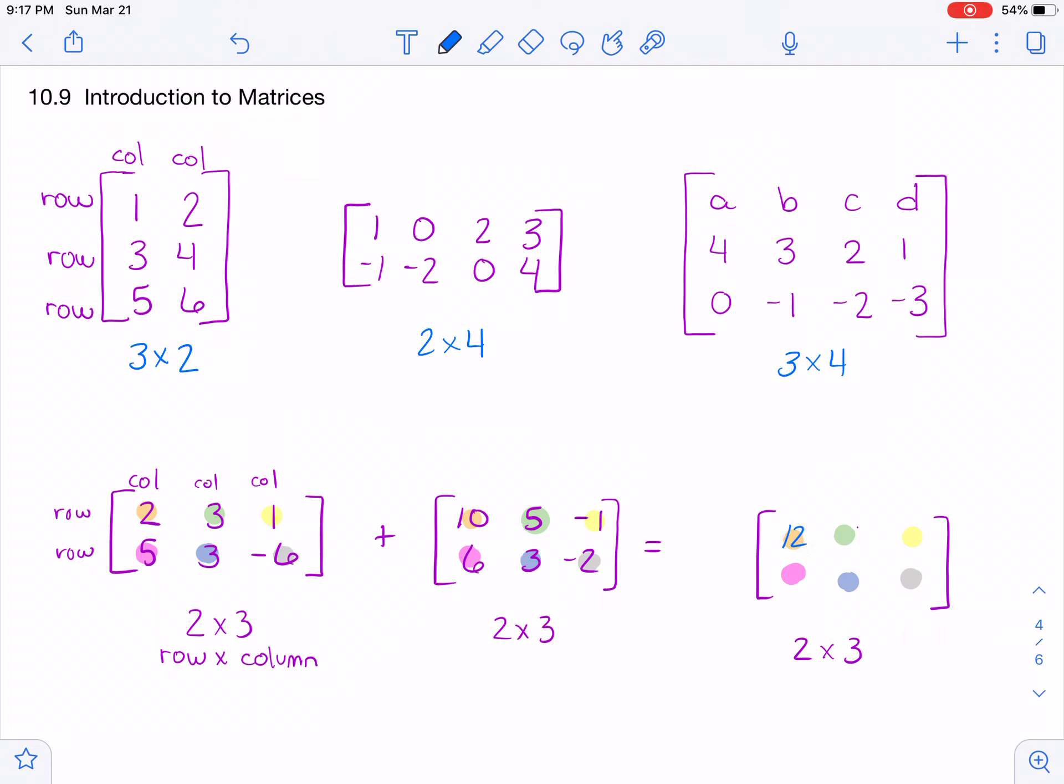And then I write it in that same position. So I have highlighted in green a three and a five. So they're in the first row, the second column. So three plus five is eight. Then the yellow one, still the first row, now the third column. So we have a positive one and a negative one. And if you combine those, you get zero.